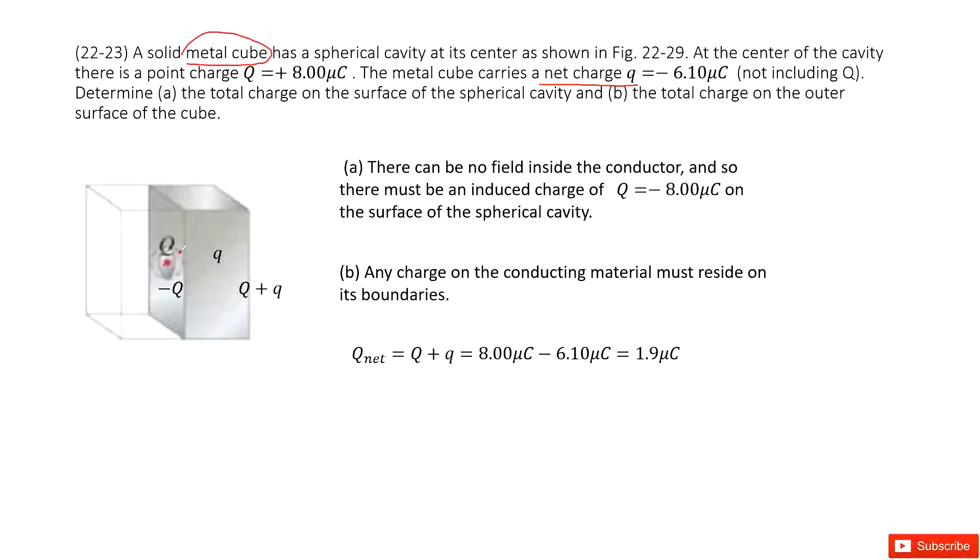This is the surface of this cavity. We can see this cube is a conductor because they tell you this is a metal cube. So conductor. For conductors, the charges were located at its surface, right?